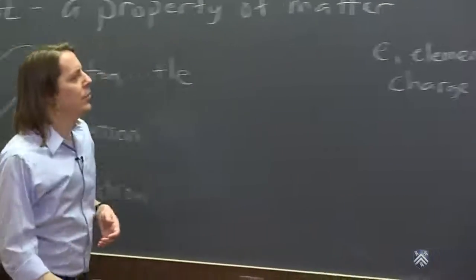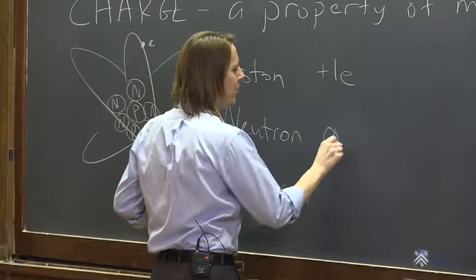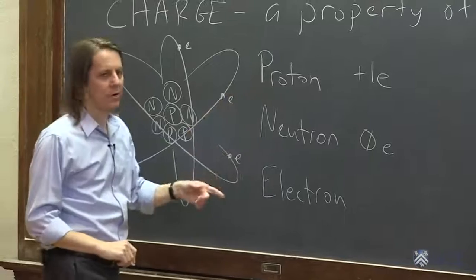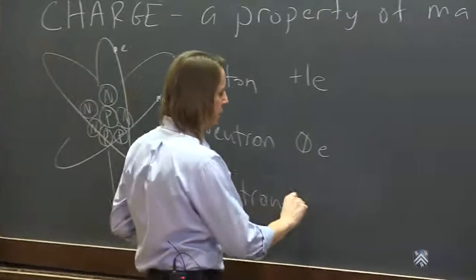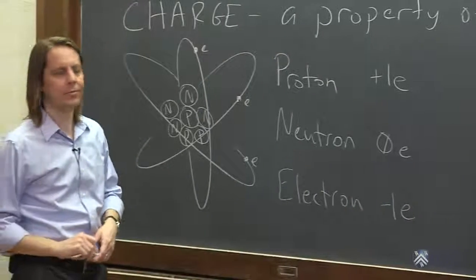So the neutron has no charge. It's neutral, as the name might imply. So it has 0e. And while the proton is plus 1e, the electron is negative. It is minus 1e. So charge can be positive or negative. That's all.